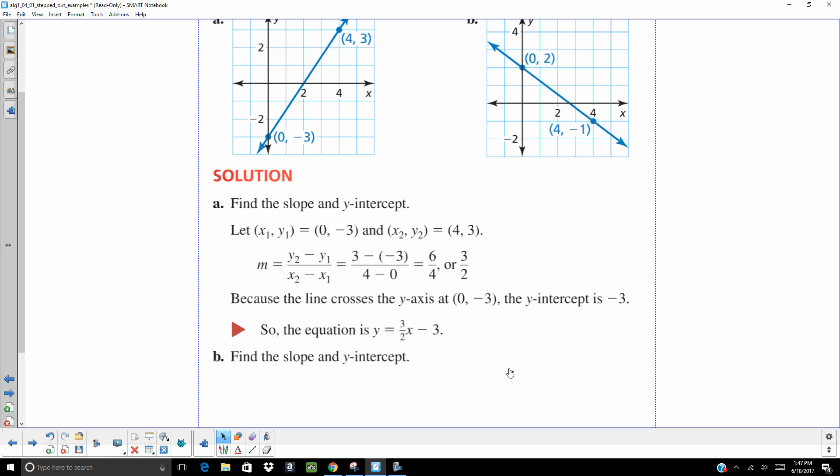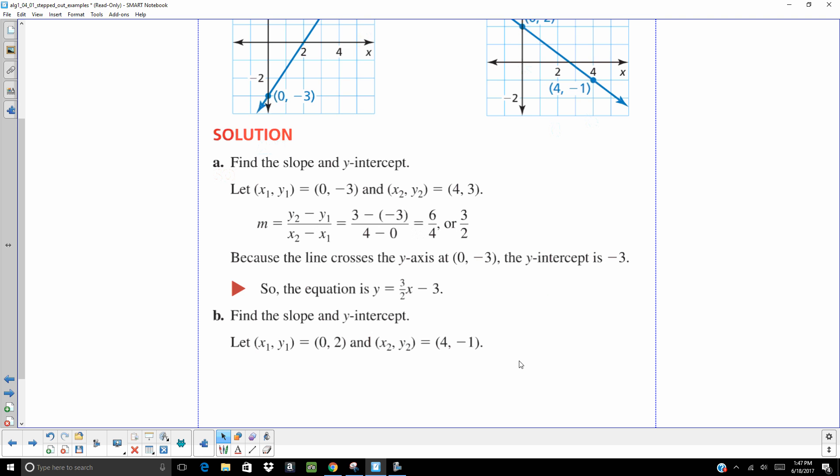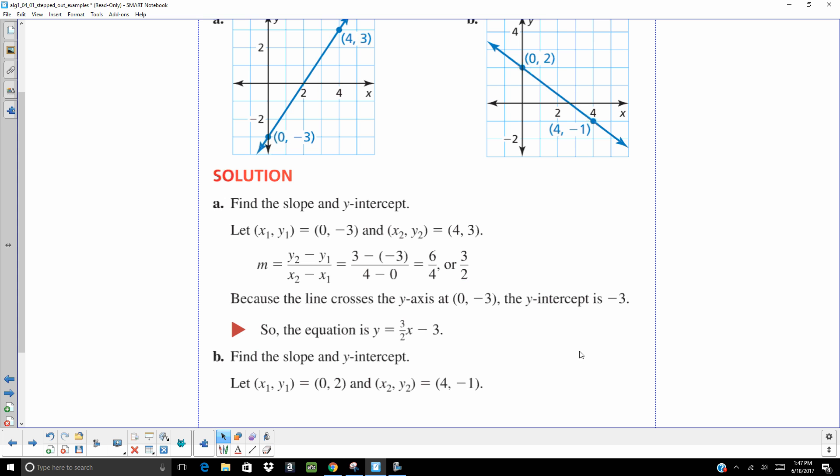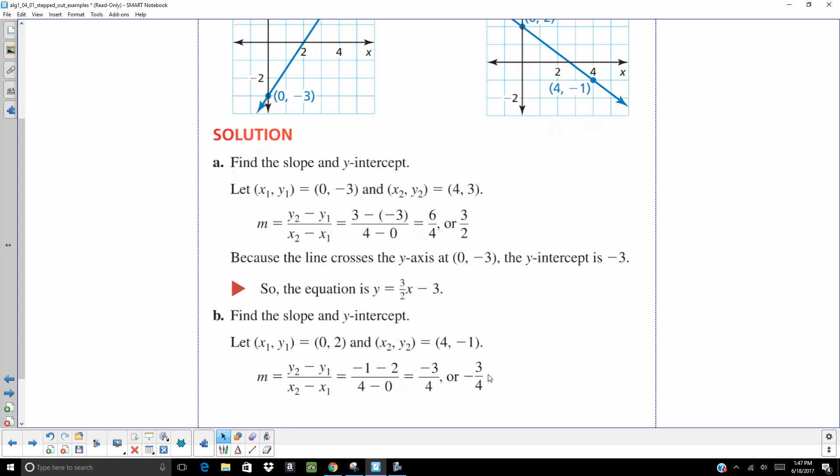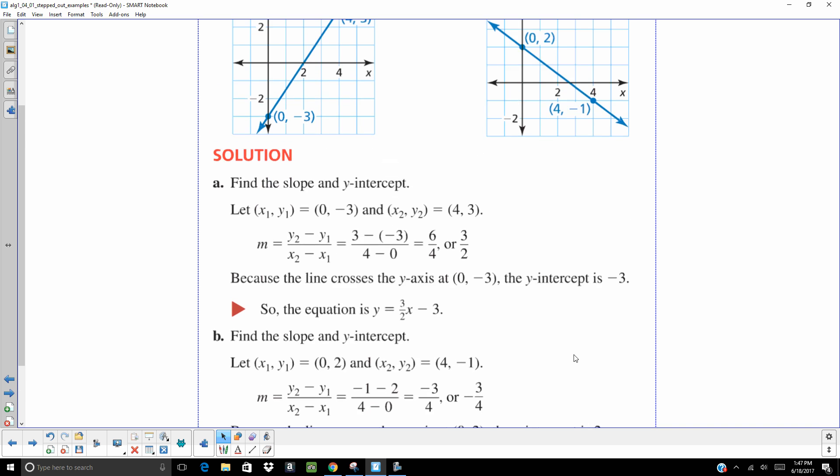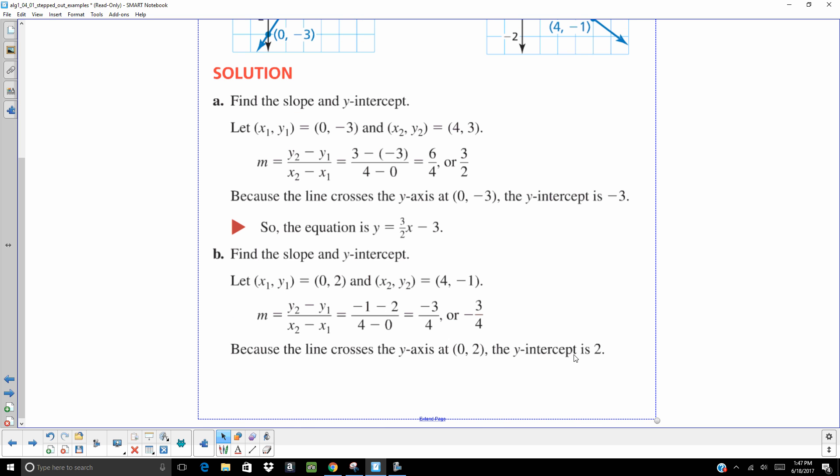Let's go ahead and do b. We're given two points. Let's find that slope. Difference of your y's, which is going to be negative 1 minus 2, and the difference of our x is 4 minus 0. Our y-intercept is 2 because it's crossing at 2. So, the equation is y equals negative 3 fourths x plus 2.